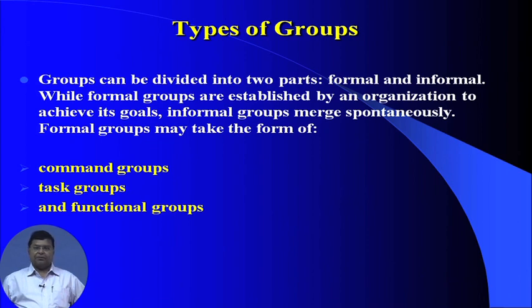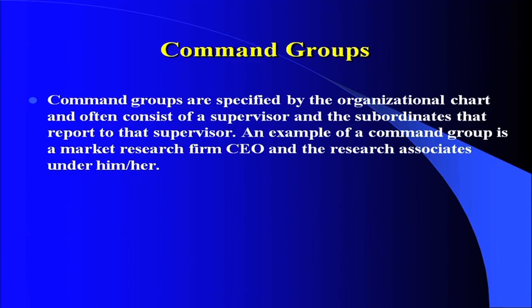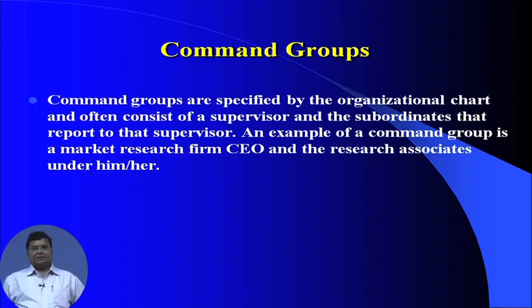Formal groups generally take three forms: command groups, task groups, and functional groups. The first one is the command group. Command groups are specified by the organizational chart and often consist of a supervisor and the subordinates that report to that supervisor. An example is a market research team with a CEO and research associates under him or her.